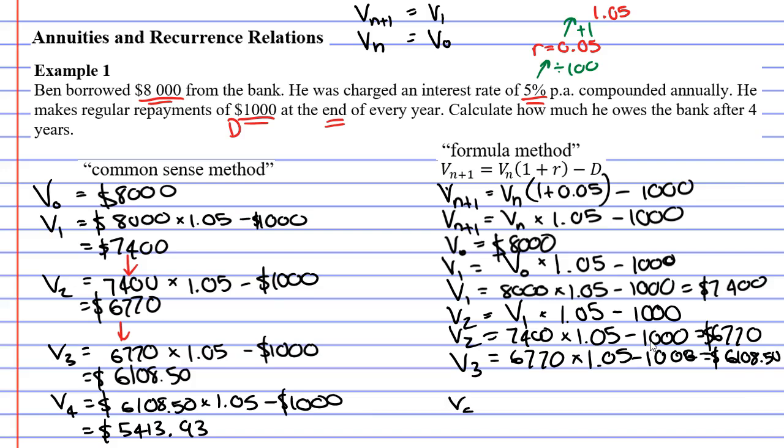And finally, to find V4, we know that on the right here, it will be V3, which is $6,108.50. So we're going to write it straight in there. $6,108.50. We're going to times this by 1.05, and we're going to subtract 1,000. And we know that it's the same as the calculations on the left. So our final solution will be the same. It will be $5,413.93.